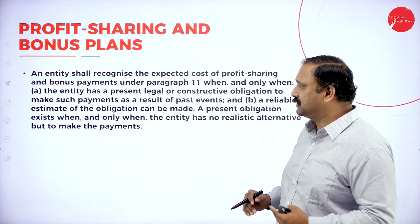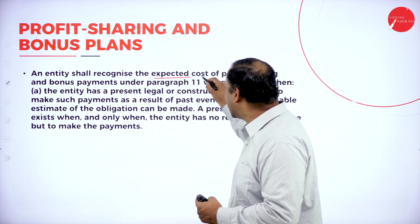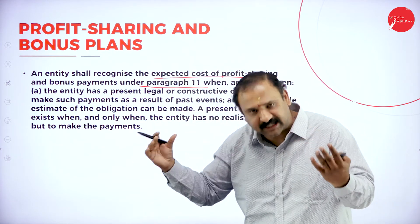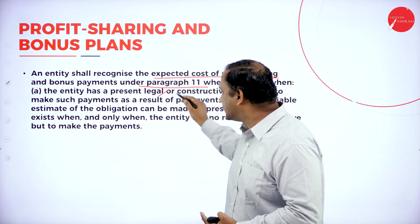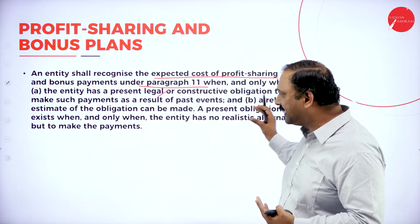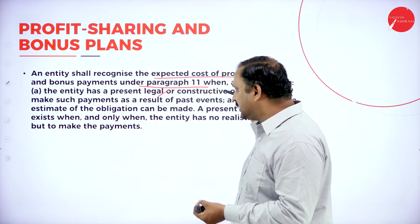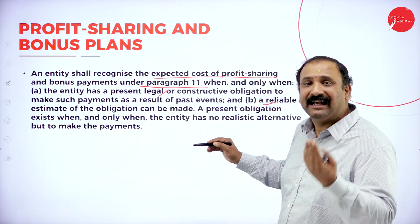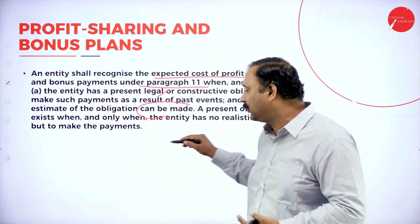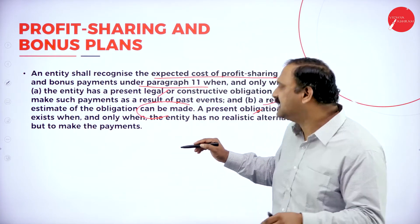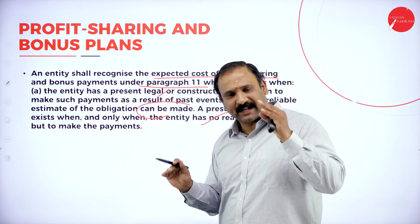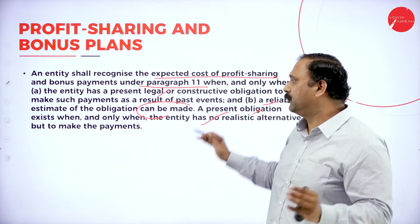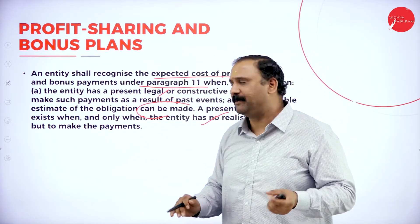The profit sharing and bonus plan: the entity shall recognize the expected cost of profit sharing and bonus payments under paragraph 11, and only when the entity has a present legal or constructive obligation to make such payments arising from past events, and when a reliable estimate of the obligation can be made. A present obligation exists when and only when the entity has no realistic alternative but to make the payment, taking into account all factors that have already been contributed.